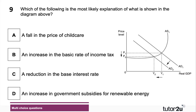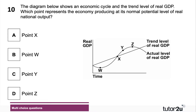Question nine: aggregate demand has shifted from AD1 to AD2. What is the best explanation for that? AD shifted to the left — an inward shift of aggregate demand. The answer is B: an increase in the basic rate of income tax, for example from 20% to 22%, would reduce households' real disposable incomes and therefore have a direct effect on consumer spending.